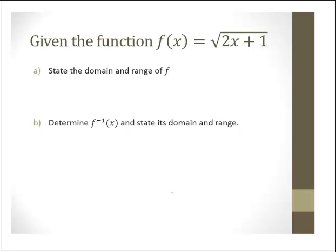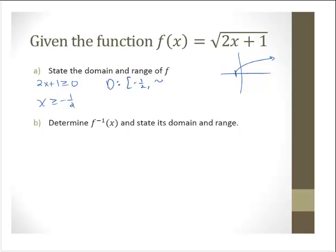Given f(x) = √(2x + 1), state the domain and range of f. This is a square root function. We need 2x + 1 ≥ 0, which gives x ≥ −½. The domain is [−½, ∞). Thinking about the graph — starting at x = −½ the curve goes upward — so the range is [0, ∞).